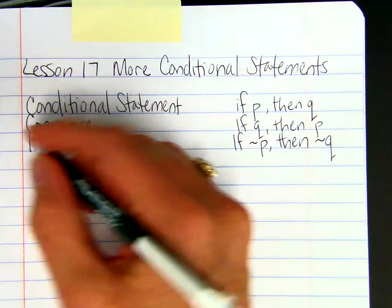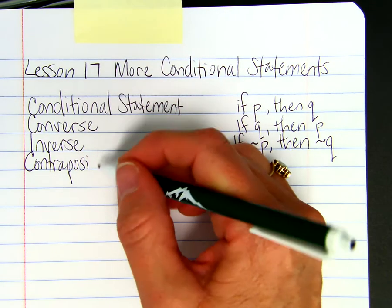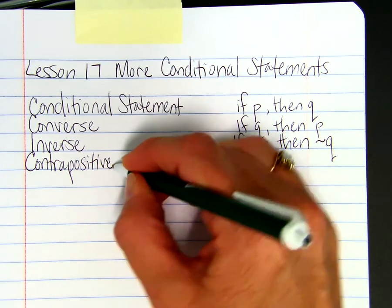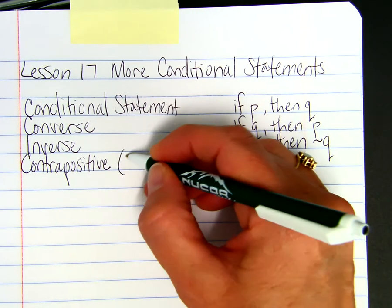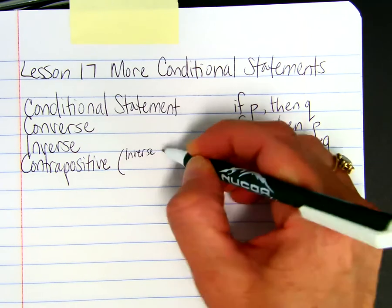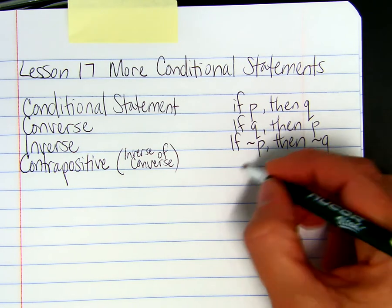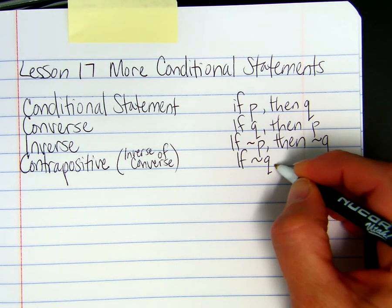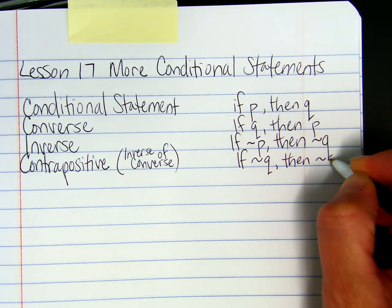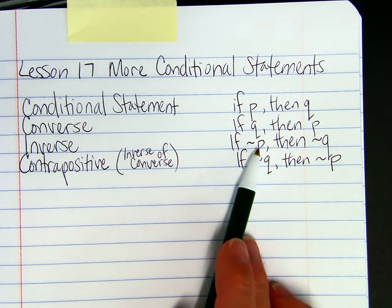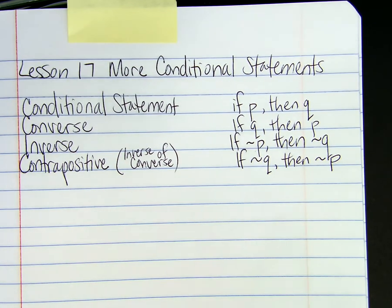Then there's the contrapositive, which is basically the inverse of the converse — or equivalently, the converse of the inverse. That is 'if not Q, then not P.'